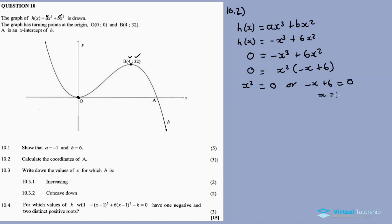Using the zero factor law, either x squared equals zero or negative x plus 6 equals zero. From x squared equals zero, x equals zero. From negative x plus 6 equals zero, x equals 6. Since point A is in the first quadrant with a positive x-value, the x-coordinate of A is 6. The y-coordinate is zero, so the coordinates of A are (6, 0).